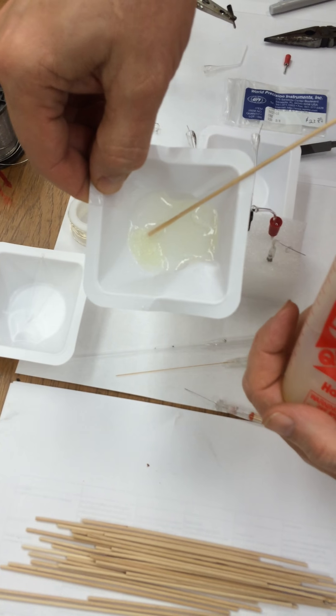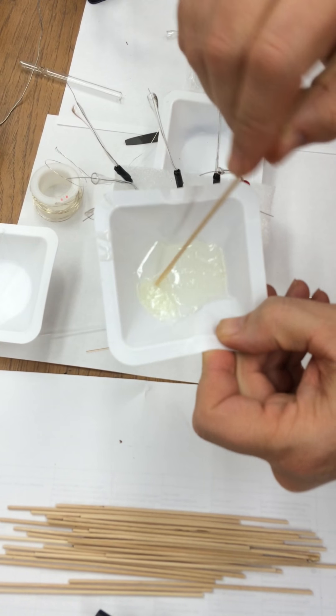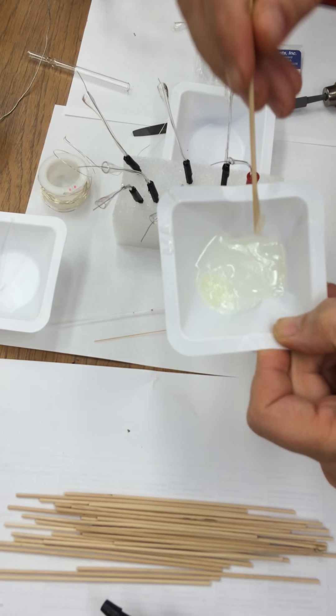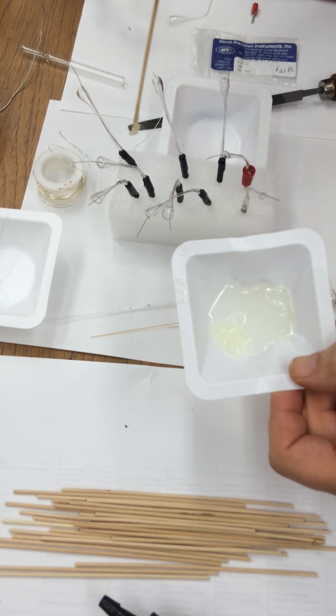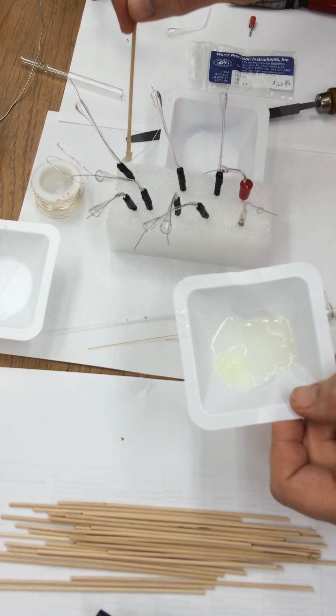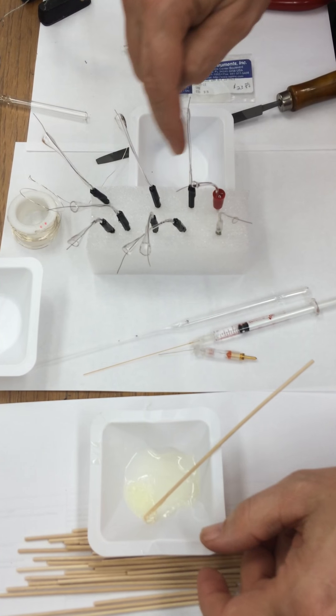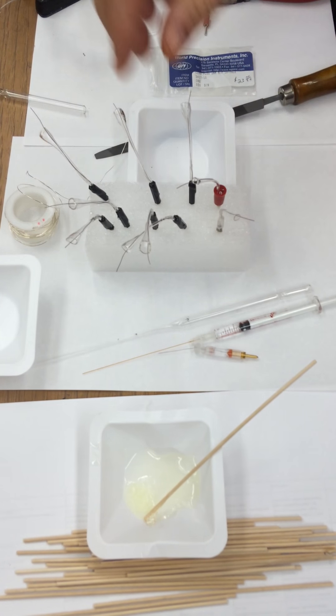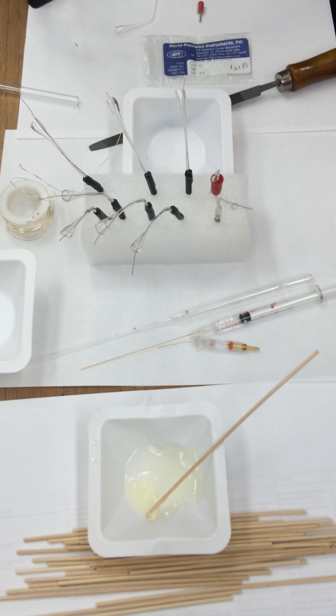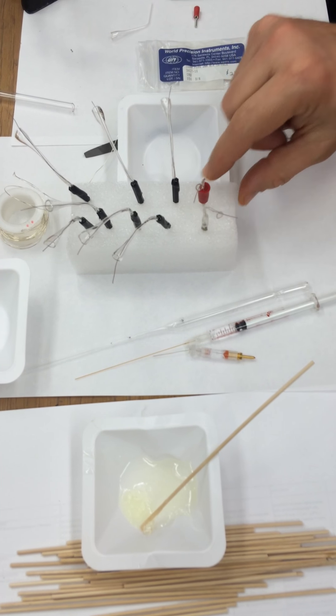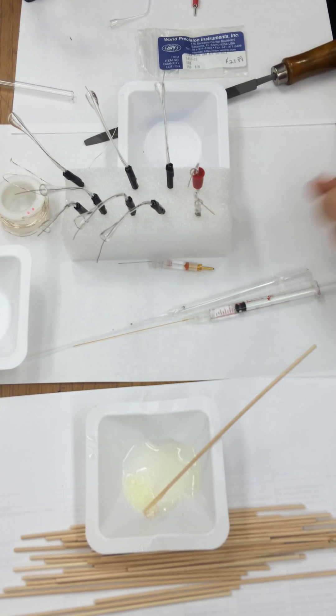So you mix these two together, equal amounts, mix it in a little weigh boat dish like that with the stick and stir it up. You can see this is already hard. Stir this up, but what's nice is you can put the glue onto the edges and it helps give more support to that glass and that little holder right there. So now you have one, two, three, four, five, six, seven, eight, nine, ten electrodes for $23 or so, and it's still a lot cheaper than one of these. Thank you.